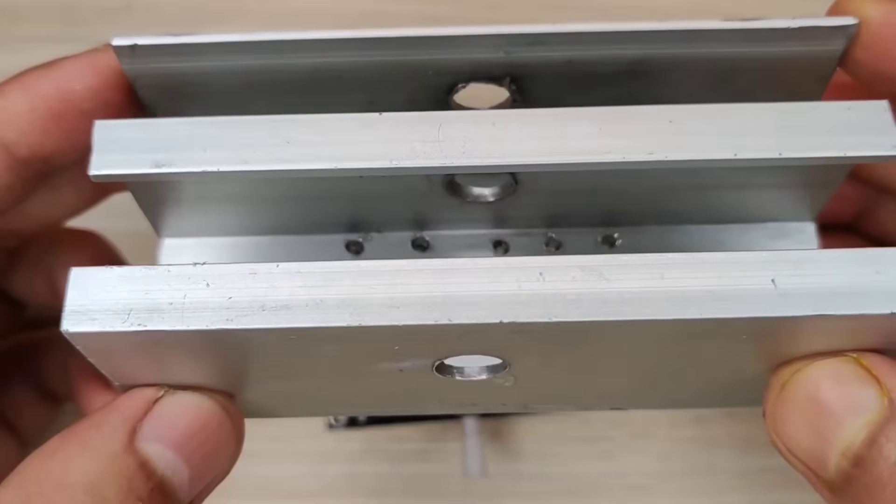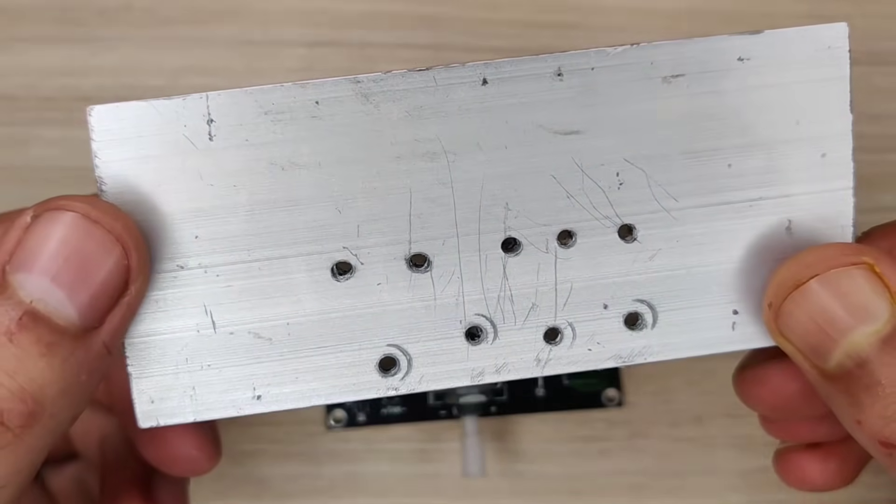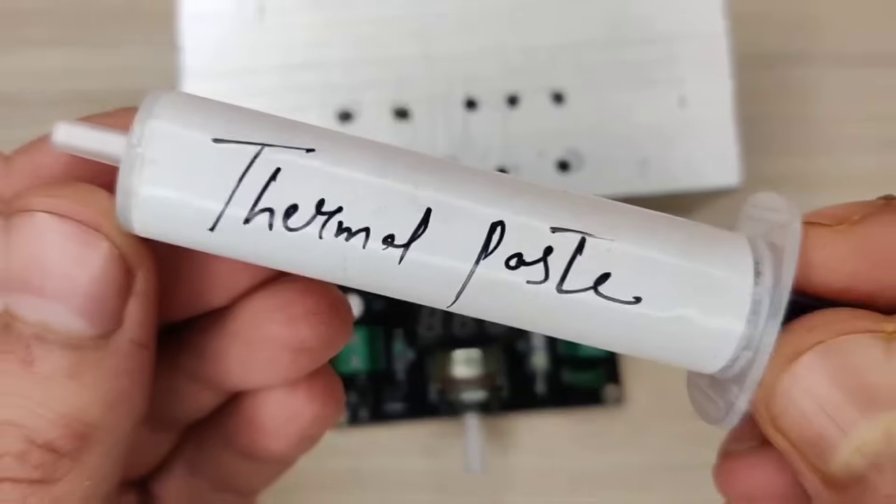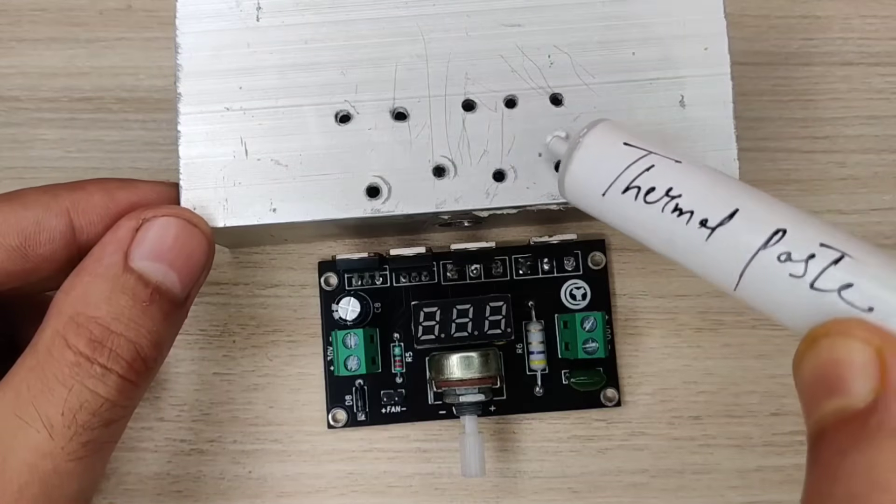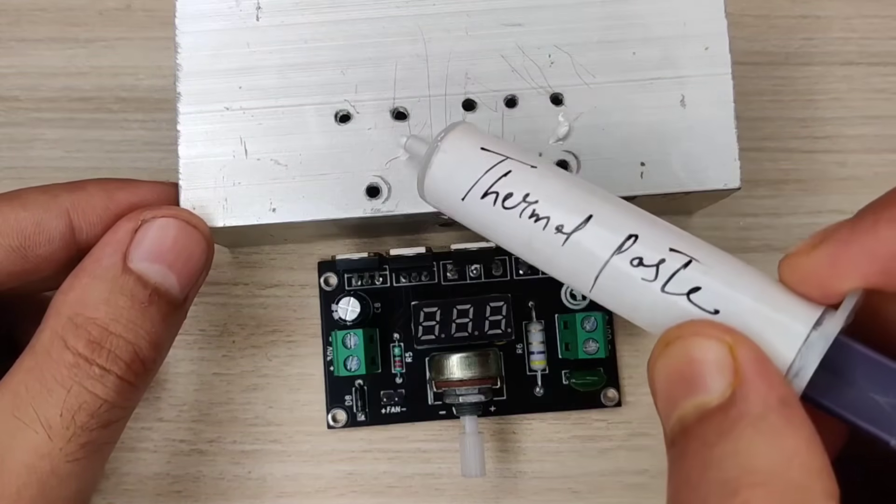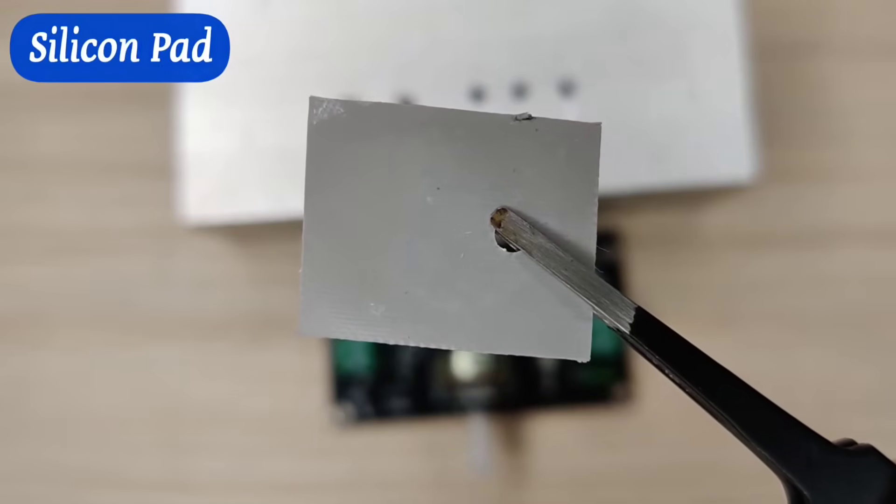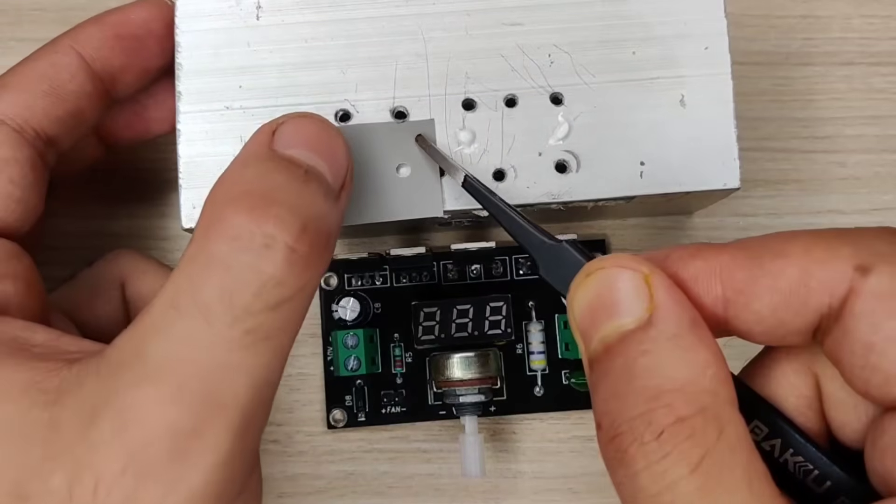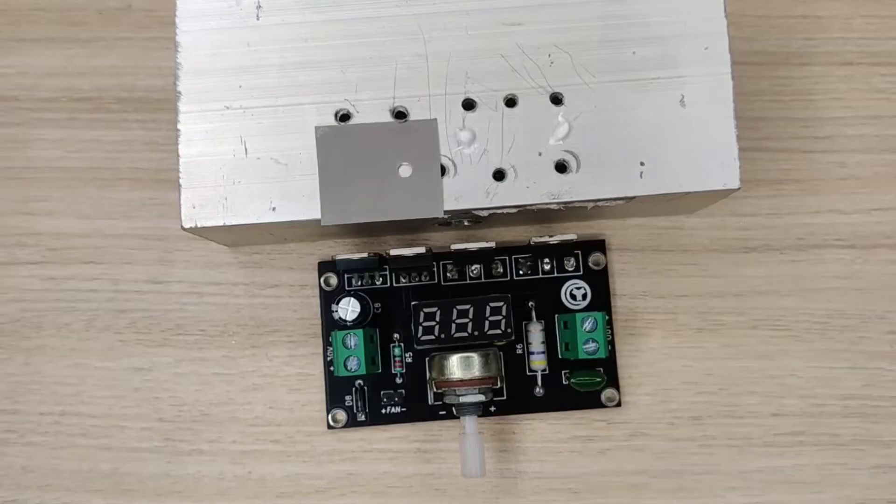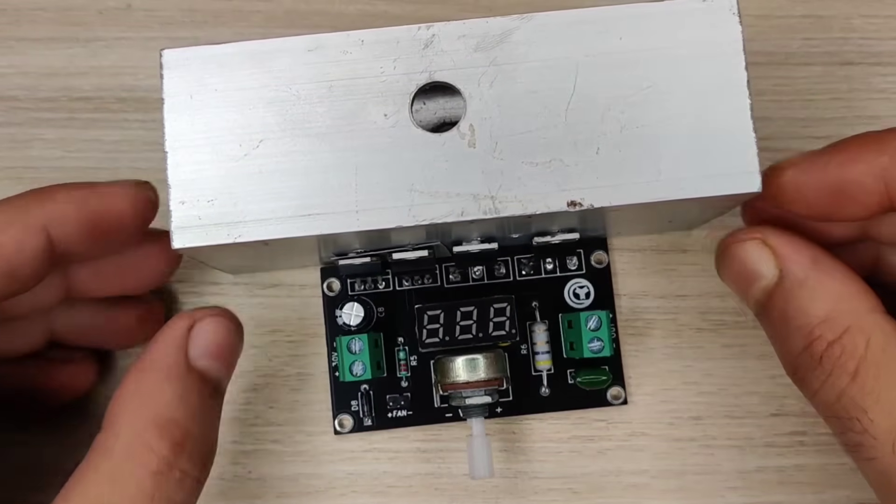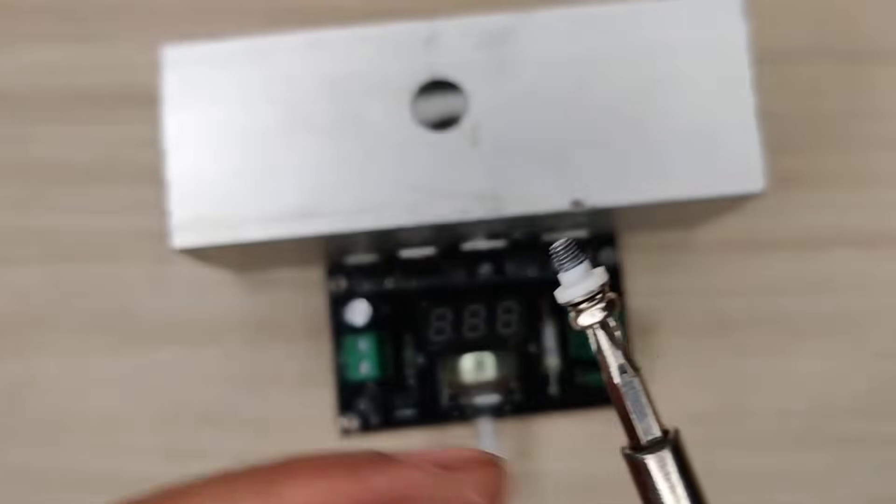Use a good sized heatsink like this, and use thermal paste for better heat dissipation. Also use silicone pads for better insulation. Use plastic bushings for further insulation.